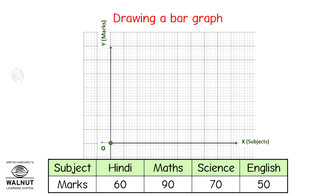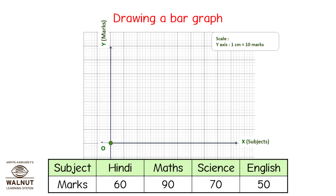Now we can move on to the next step. Since we have to plot the marks, let's take a careful look at the marks in the table. They are all multiples of 10 and the range is between 50 and 90. So we have to pick a scale so that the marks can be plotted properly on the y-axis. Since there are no marks below 50, we can start from 40 and go on in jumps of 10 marks for 1 cm. So that is our scale: 1 cm equals 10 marks. Now let's mark the marks on the y-axis.